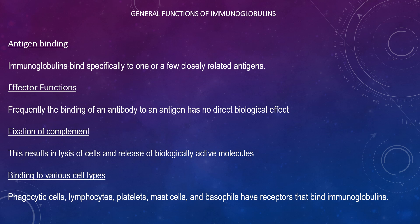Looking at the effector functions, frequently the binding of an antibody to an antigen has no direct biological effect. The other significant biological effects are a consequence of the secondary effector functions of antibodies. The immunoglobulins mediate a variety of these effector functions. Usually, the ability to carry out a particular effector function requires that the antibody binds to an antigen. Not every immunoglobulin will mediate all effector functions.